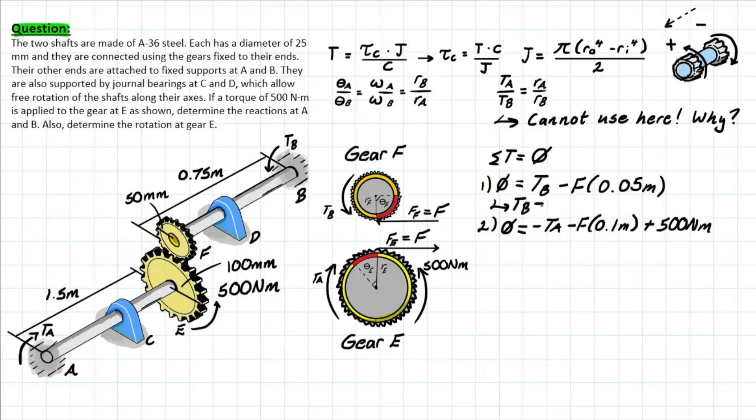So a nice thing that we can notice with this first equation up here is if we bring TB to the other side, it's going to equal F of 0.05 meters, which is nice because now we can use this relationship.